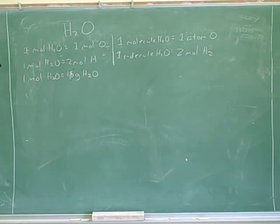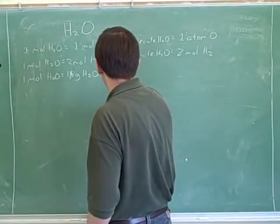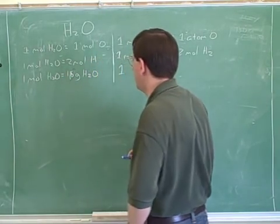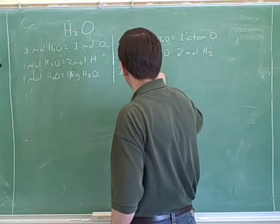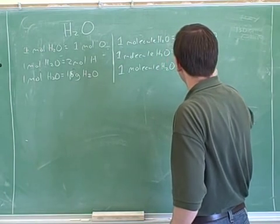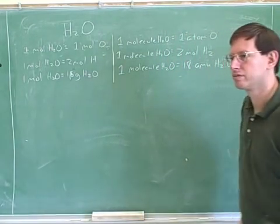Molecules, right. So it's easy to confuse moles and molecules since they start the same, but they're very different. So if one mole of water is 18 grams of water, then one individual molecule of water is 18 AMUs of water.